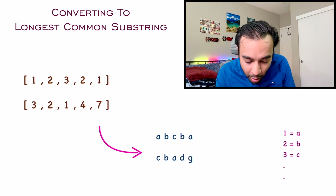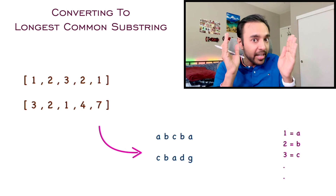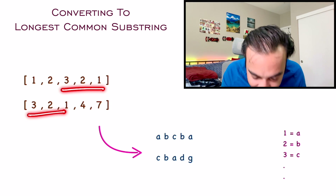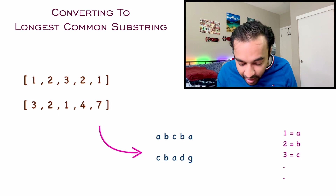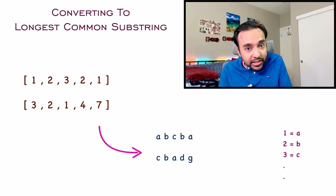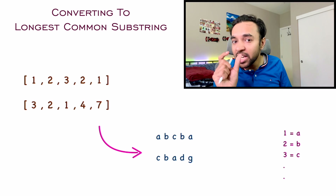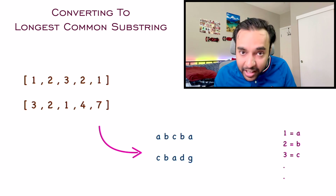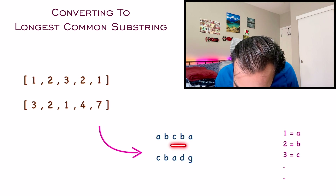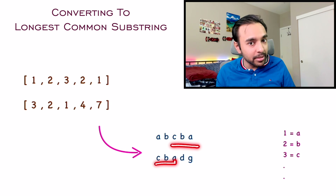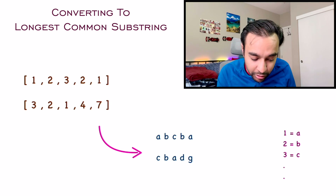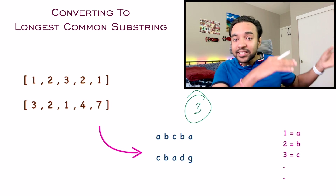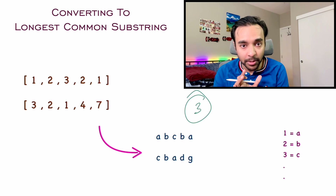Now, in your original test case you had to find a subarray that is contiguous and has the maximum length — the answer was 3, 2, 1. Notice these two strings: you are now given two strings and you just have to find out the length of the longest common substring. If you look closely, c, b, a is the longest common substring, and its length is also 3. So you can say that this problem translates exactly into finding the length of the longest common substring.